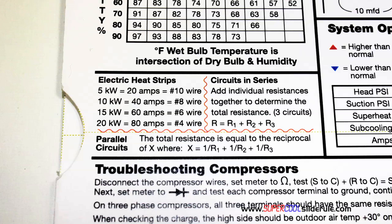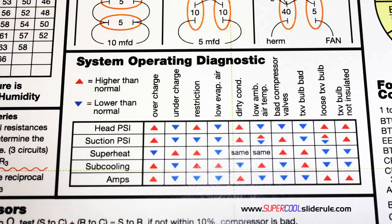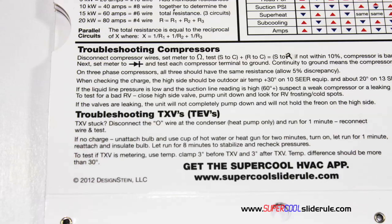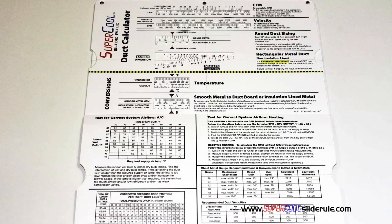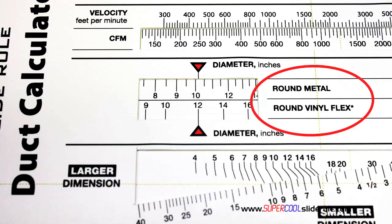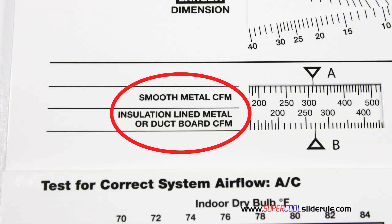It includes an electric heat strip guide, a complete system troubleshooting diagnostic chart, and how to troubleshoot compressors and TXV. Inside is packed with even more information. It performs sizing of both metal and flexible duct, and has the only direct reading conversion from smooth metal to insulation-lined metal we've ever seen. Most technicians have never been taught that if the insulation is on the inside of the ductwork, you cannot size it with a regular duct calculator.